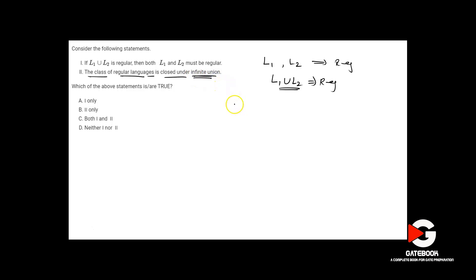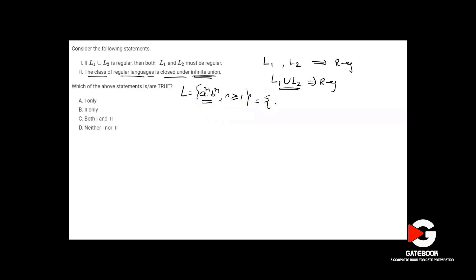How do we prove this? Take any non-regular language. For example, consider the language {a^n b^n | n ≥ 1}. This is a well-known non-regular language — it is DCFL but not regular. The strings in this language are: ab, a²b², a³b³, and so on.